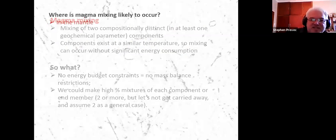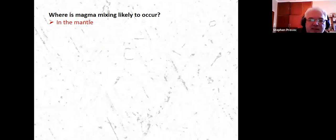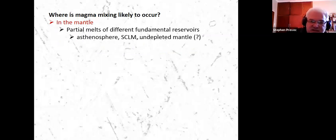So magma mixing, where are we likely to find it? The mantle is the first place it's likely to occur. So we're talking about source processes, so we can modify our mantle partial melts before they get out of the mantle. We have a bunch of different possible reservoirs to play with, including the convecting asthenospheric mantle, the subcontinental lithospheric mantle, so the non-convecting component, and then potentially the lower undepleted mantle, which may be contributing materials which can be melted, probably in case of plumes, and it's not rising as a melt, but it can still experience decompression melting later.